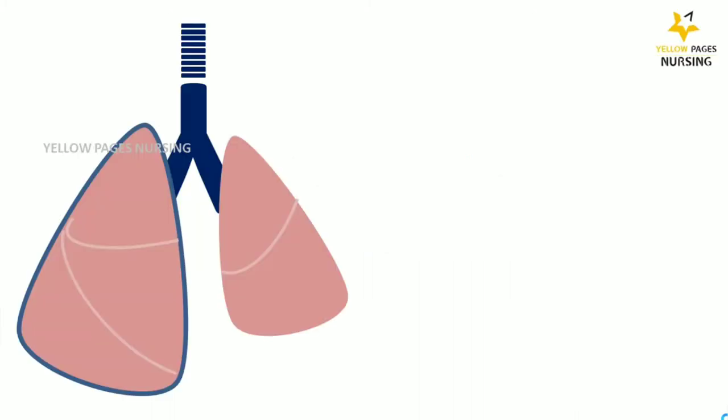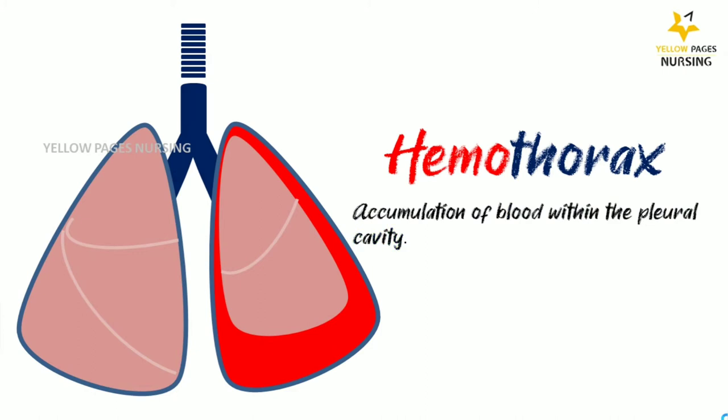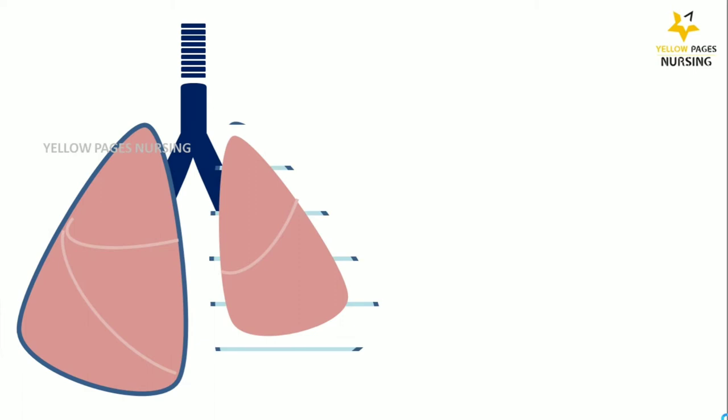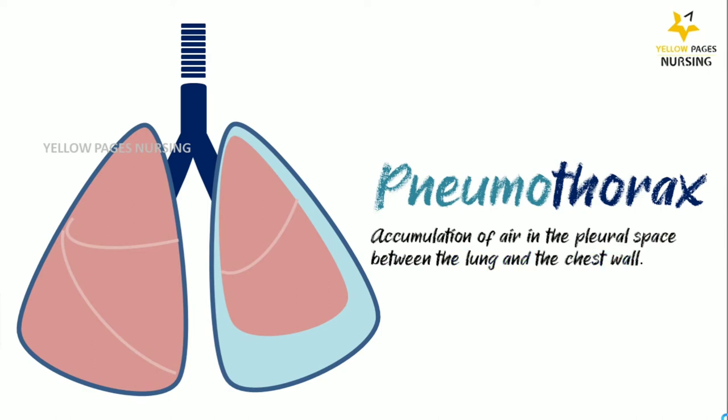Let's look at the conditions where chest drains or ICDs are indicated. Hemothorax is the accumulation of blood within the pleural cavity. Next is pneumothorax, which is the accumulation of air in the pleural space between the lung and the chest wall.